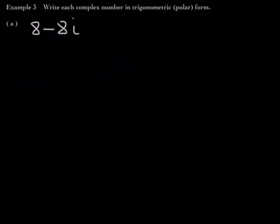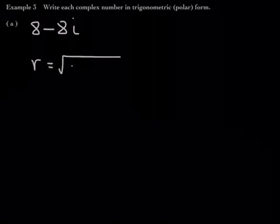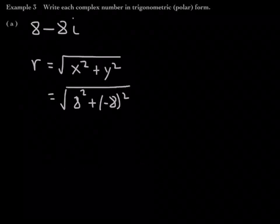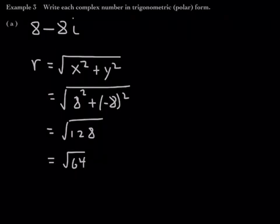Example 3: Write each complex number in trig or polar form. The first complex number is in standard form and we need to convert it to polar form. To write a number in trigonometric or polar form, you need two things: r, the modulus or absolute value, and theta, the argument. To find r: r equals the square root of x squared plus y squared, so r equals the square root of 8 squared plus negative 8 squared, which is the square root of 64 plus 64, which is the square root of 128, which simplifies to 8 root 2.